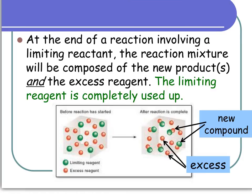Here's a diagram I found useful. This is the beginning of the reaction. On the left side, the green dots are your limiting reactant and the red dots are your excess reactant.